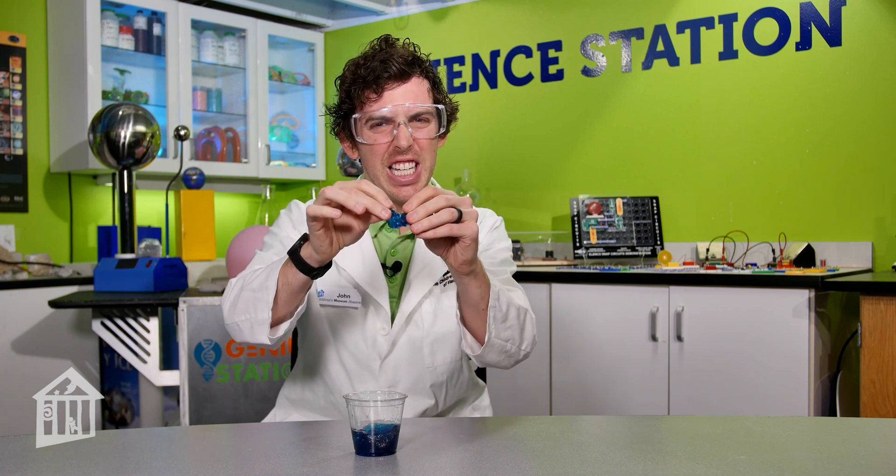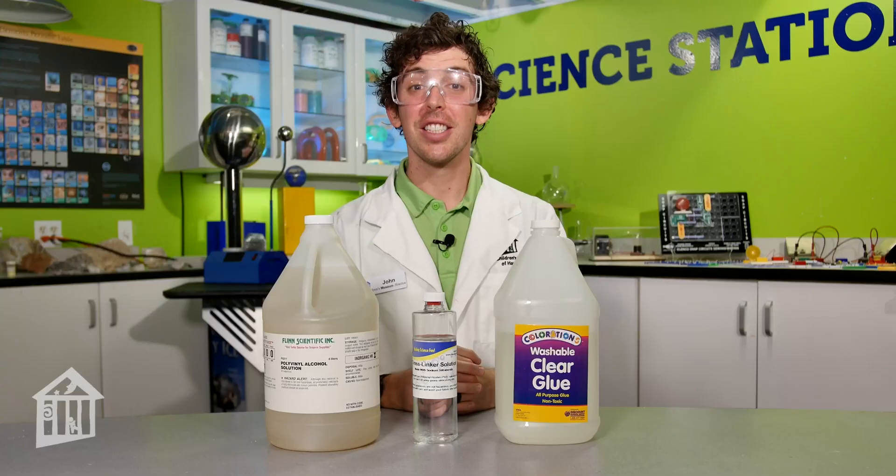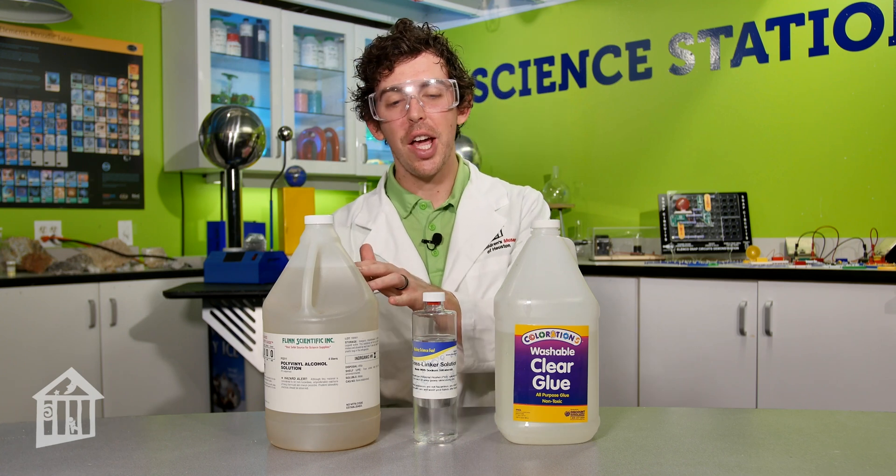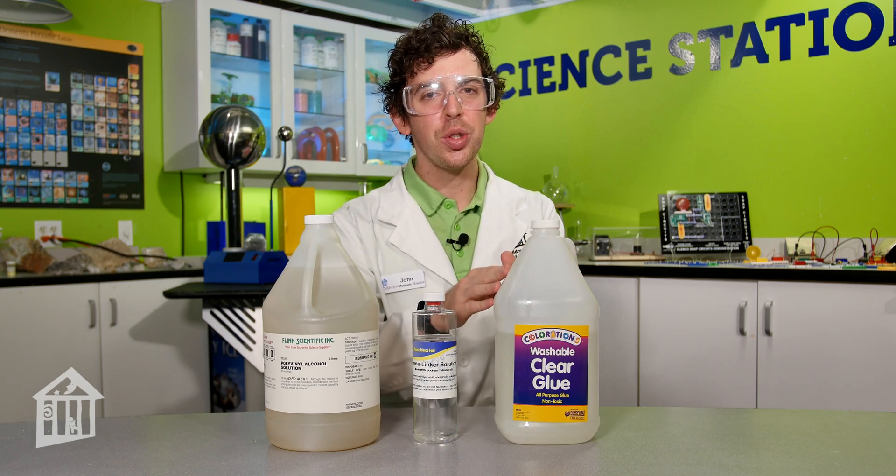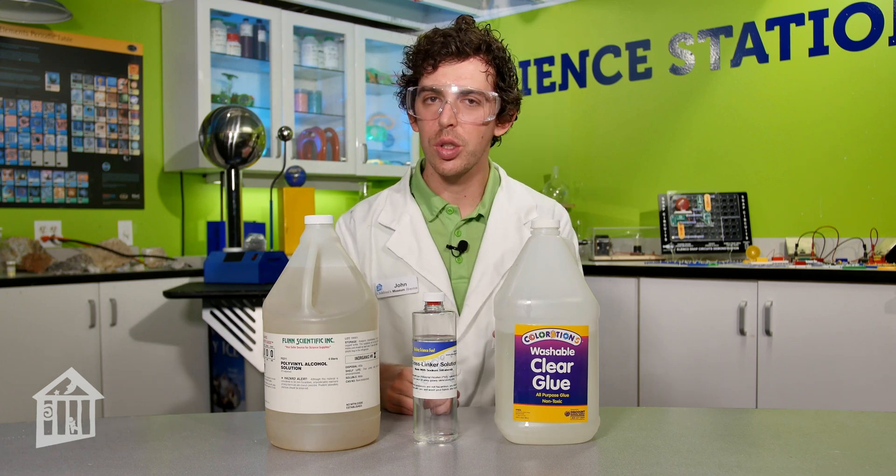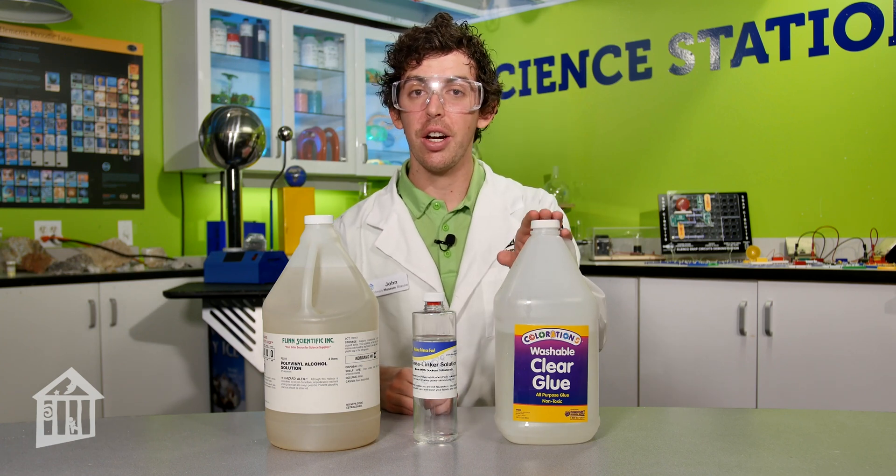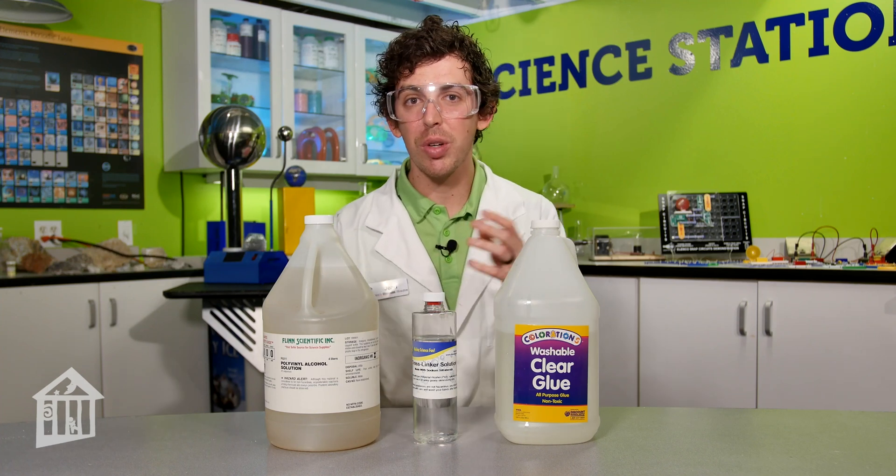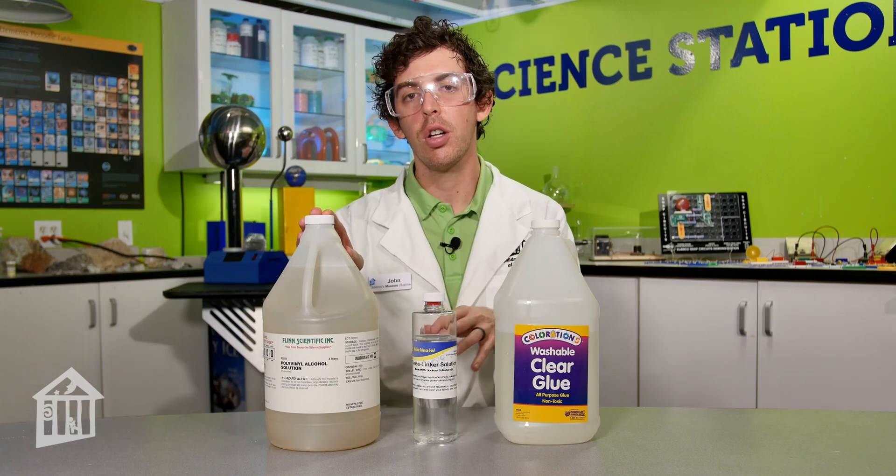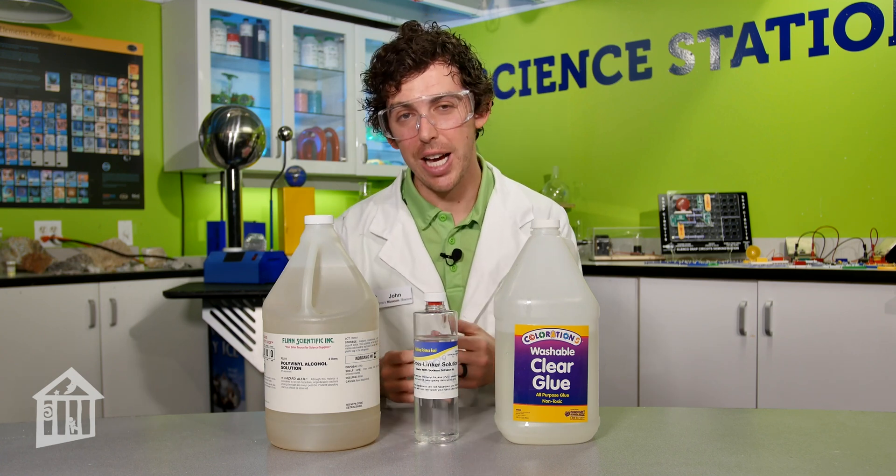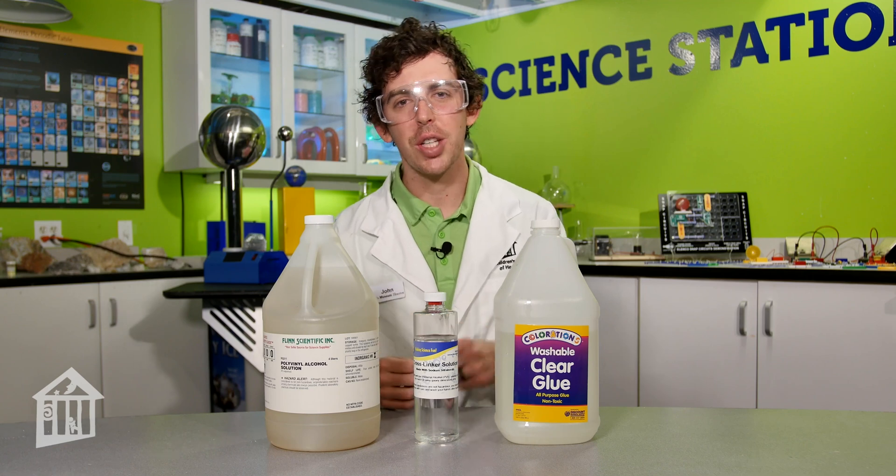The slime we're gonna make today uses something called polyvinyl alcohol, which is a relative to what is used if you've ever made clear glue slime or white glue slime. I have some right here - this contains something called polyvinyl acetate, so they're definitely related. We're gonna use the polyvinyl alcohol or PVA mixed with a borax solution to make our slime today. I'm gonna gather my materials and we'll get started.